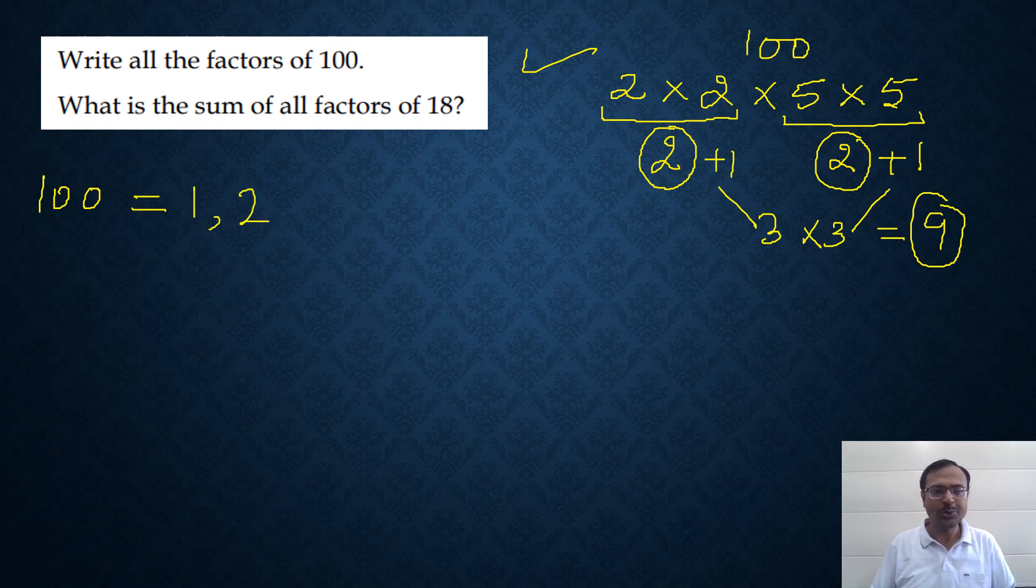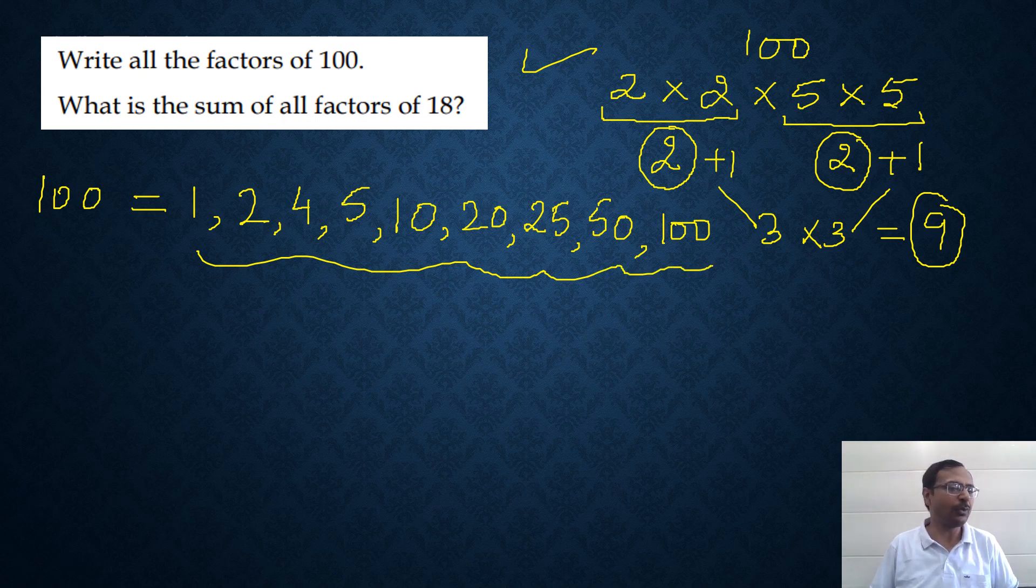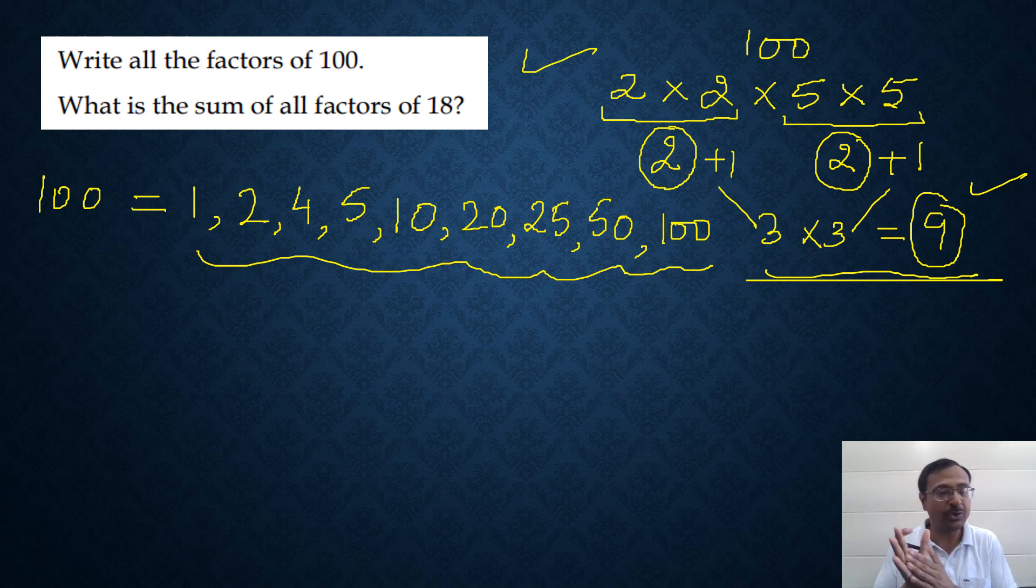1, 2, 4, 5, and after 5 you have 10, and then we have 20, and then 25, then 50, and finally the number itself, that is 100. So how many factors? Just count - you will get exactly 9 factors. This is a very important thing when you're studying in class 6 or preparing for any competition. You should know how many factors there are for a particular number so that you don't miss out on any factor.